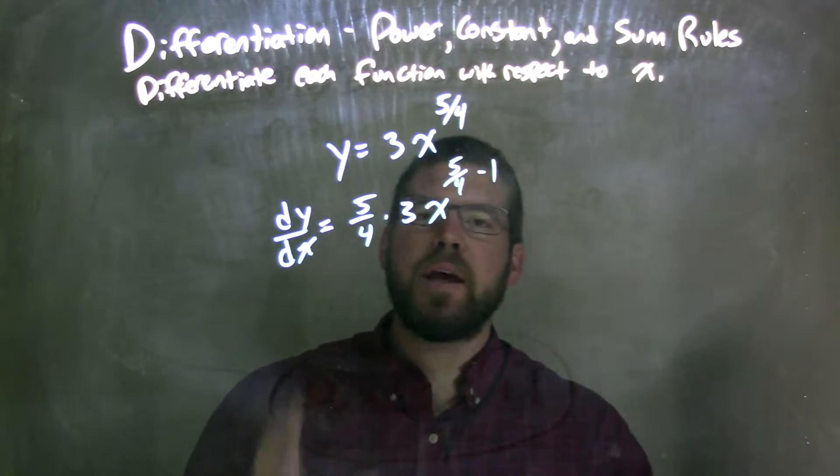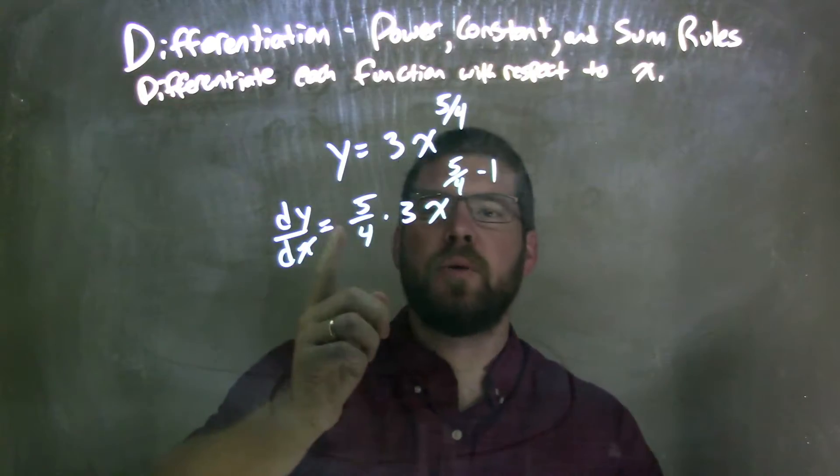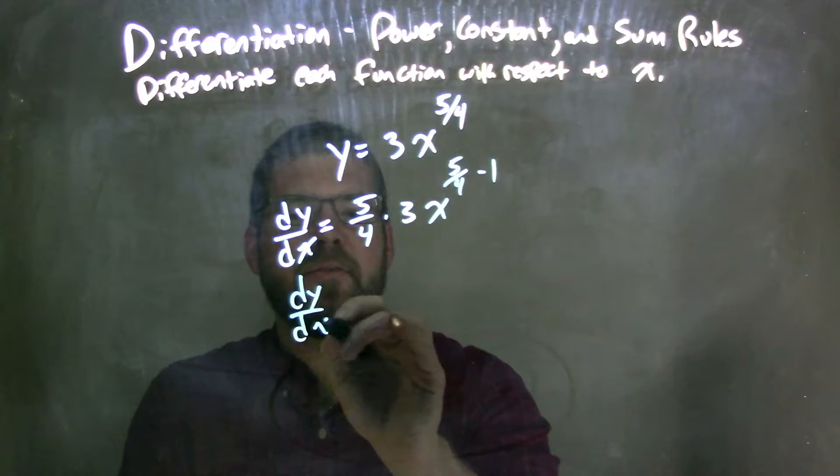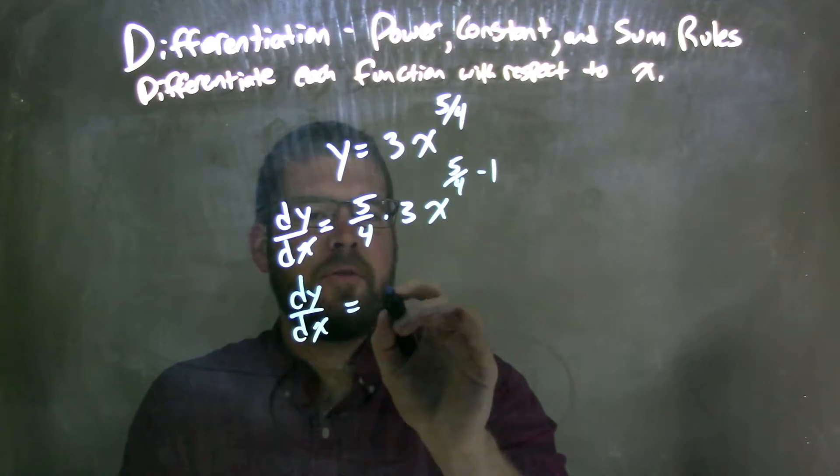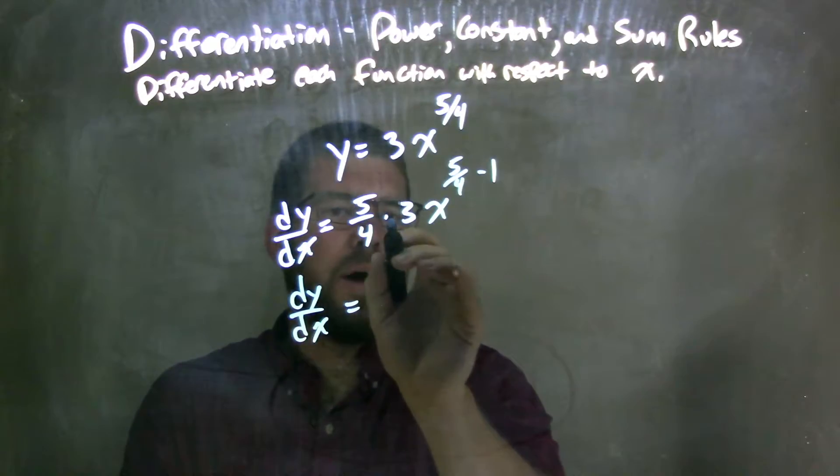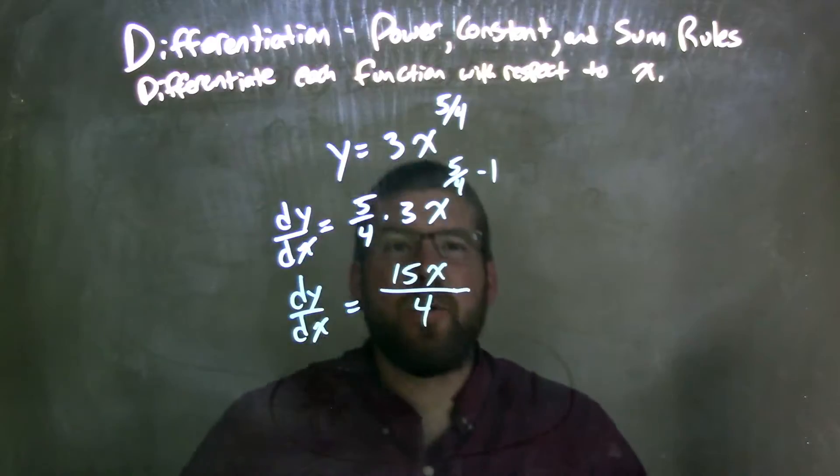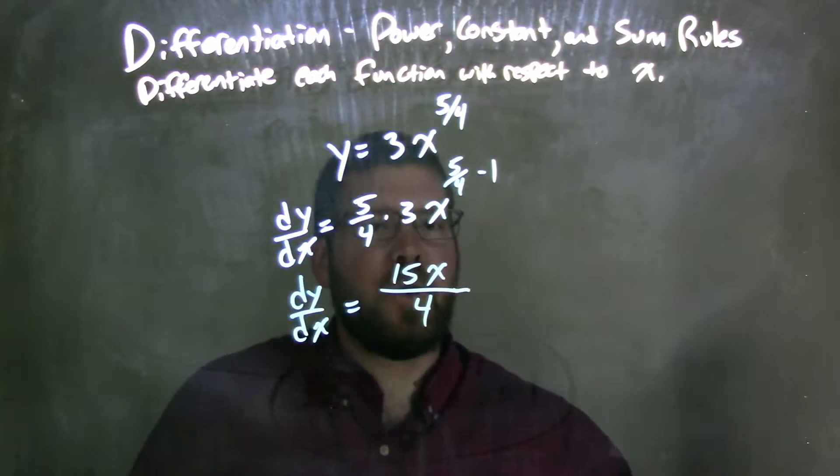So now when I simplify this, I have to be good with my fractions. Multiplying fractions as a constant, we have dy/dx is equal to—well, the way you multiply that, really that 3 is over the 1, so we have 15x right there over 4.